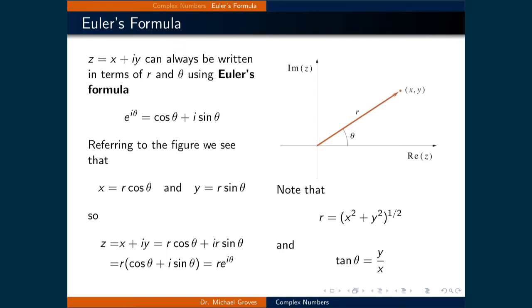Now that we have some experience dealing with complex numbers, let's introduce Euler's formula. As we will see in this course, it will be very convenient to express functions in polar coordinates and relate trigonometric functions with exponentials. Euler's formula is a way to relate a complex number written using trigonometric functions with a complex exponential. It is defined as e raised to the power of i times theta being equal to the cosine of theta plus i sine theta.